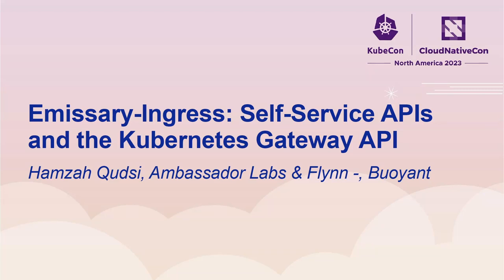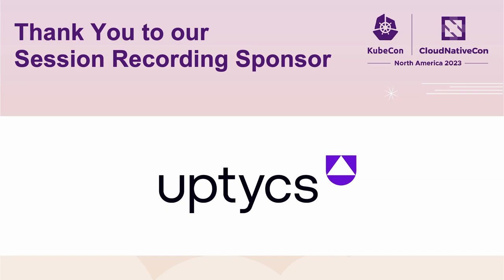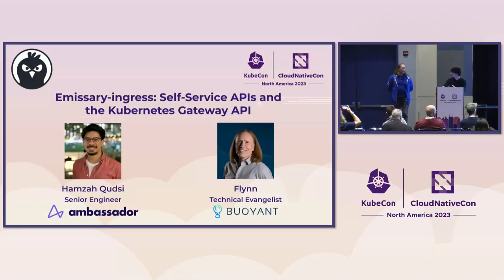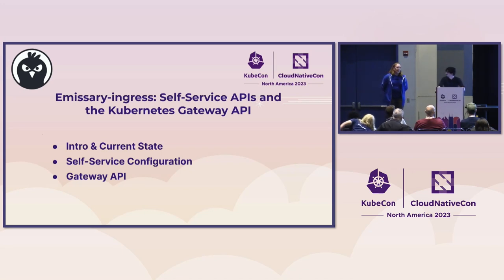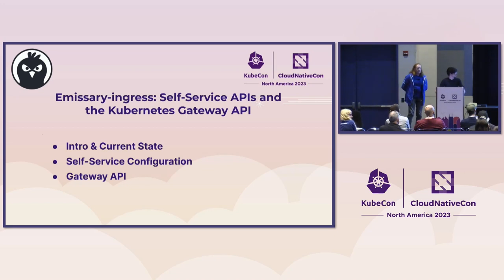Hello, everyone. Thank you for coming. This is the maintainer's track for Emissary Ingress. I am Hamza, a senior engineer and ambassador. I'm Flynn, a technical evangelist for Boyant. I was the original author of Emissary Ingress, lo these many years ago, before I went over to the dark side to work in marketing — though I'm still a maintainer. We're going to do a quick intro and give a quick update on the current state of the project. We'll talk about self-service configuration and then give our thoughts about Gateway API.